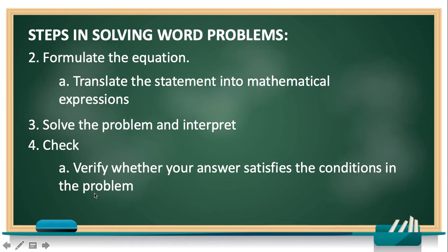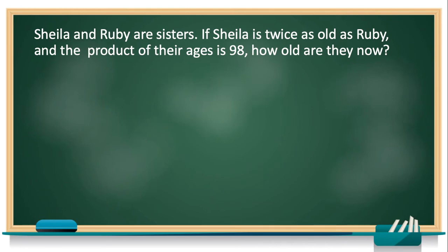So let's go and try to solve some problems and apply the steps given to you. For this problem, Shella and Ruby are sisters. If Shella is twice as old as Ruby and the product of their ages is 98, how old are they now? So we are looking for their ages by translating verbal phrases to mathematical equations. Now let's solve the problem by following the steps. For step 1, we have to analyze the problem. As mentioned a while ago, sketching or drawing the problem will help you picture out the problem.